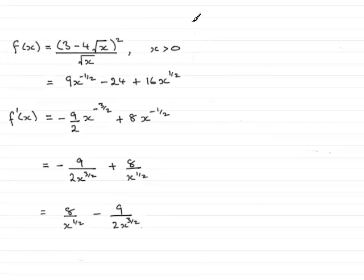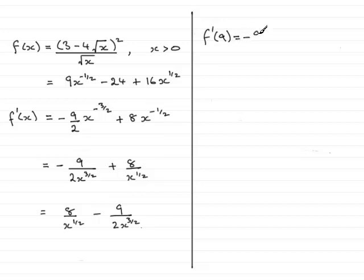Now, in this part of the question, we've got to find the value of f dash of 9. So what that means is that from the previous part of the question, we had that f dash x was this equation here, which I simplified.